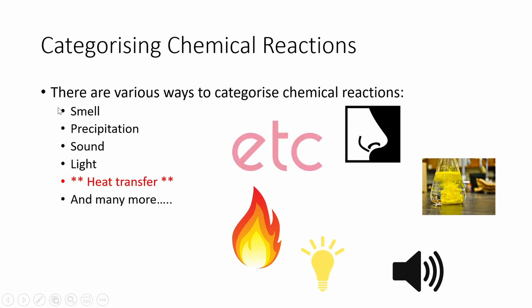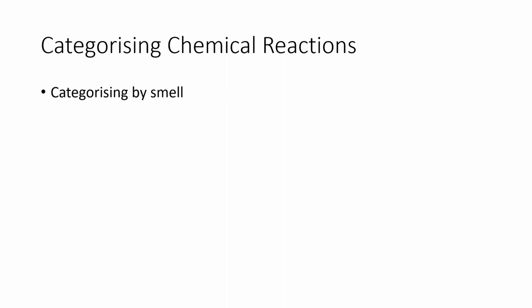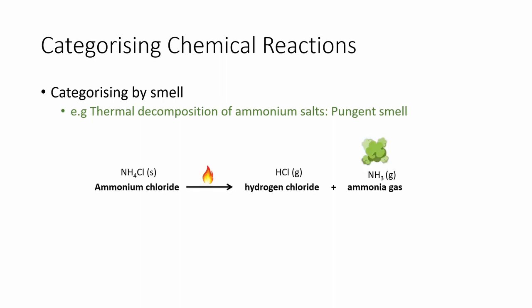Let us first look at two ways to categorize chemical reactions in a little more detail, just to show that there are other ways besides heat transfer. Let's look at smell and precipitation. Categorizing by smell is usually done in terms of whether a reaction produces good or bad smells. An example of a reaction that produces bad smell is the thermal decomposition of an ammonium salt such as ammonium chloride, which decomposes into hydrogen chloride and ammonia gas — ammonia gas has a distinct pungent smell.